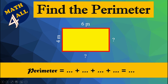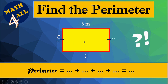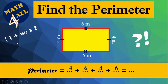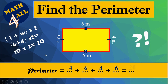Find the perimeter. We have to add all the sides. We have six and four, but there are two missing sides. It's a rectangle, and in a rectangle the opposite sides are equal. So this side equals four meters and this side equals six meters. The formula for the perimeter of a rectangle is: length plus width, multiplied by two. Here we have six plus four, multiplied by two: six plus four equals ten, times two equals 20. So the perimeter of the rectangle equals 20 meters.